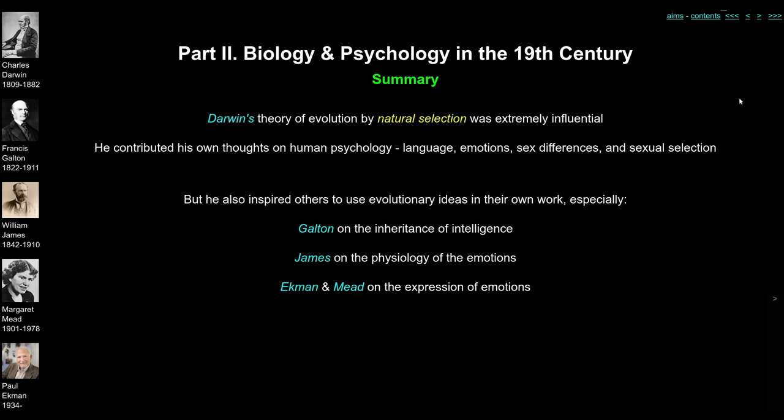In summary, evolutionary theory influenced early psychologists in several ways. Darwin himself extended natural selection to aspects of human psychology, particularly language, emotions, sex differences, and sexual selection. Most importantly, he inspired others: Galton, directly inspired by his cousin Darwin, worked on statistics and the inheritance of intelligence, and later eugenics. William James was influenced by instinct and the physiology of emotions. And Paul Ekman and Margaret Mead were both influenced by Darwin in their research on the facial expression of emotions.